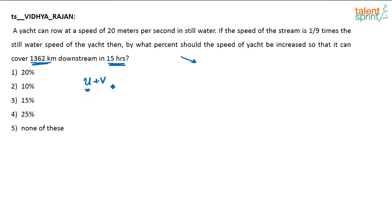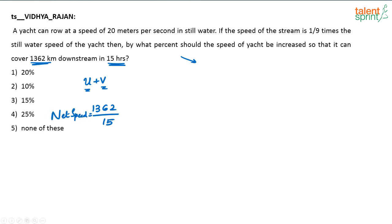To cover 1362 kilometers in 15 hours, the net speed required is 1362 divided by 15, which equals 90.8 kilometers per hour. So 90.8 km/h must be the net speed.